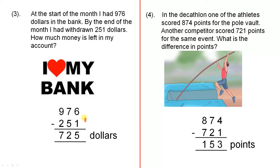So 976 minus 251. 6 minus 1 is 5, 7 minus 5 is 2, and 9 minus 2 is 7. $725 left in my account.